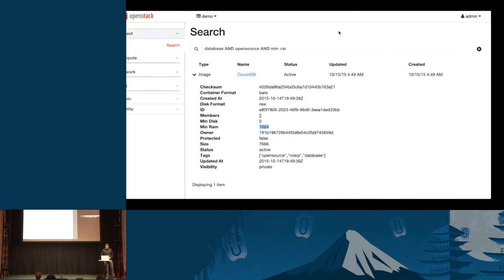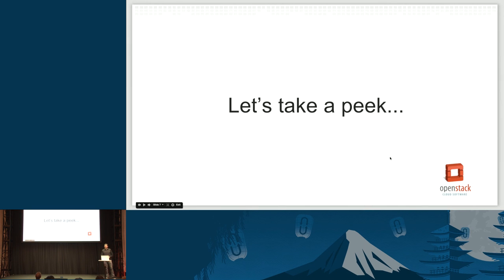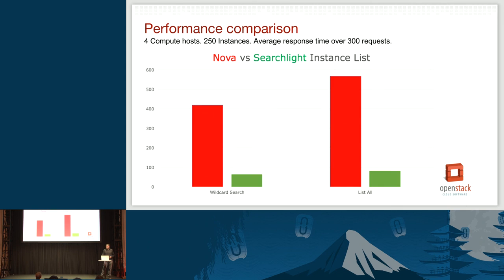That's the UI we're creating for Horizon — cross-resource searching available with Liberty via a patch you can pull down. On the performance side, with just four compute hosts and 250 instances, wildcard search showed anywhere from four to eight times performance improvement over Nova. Searchlight actually works as an effective caching layer as well.